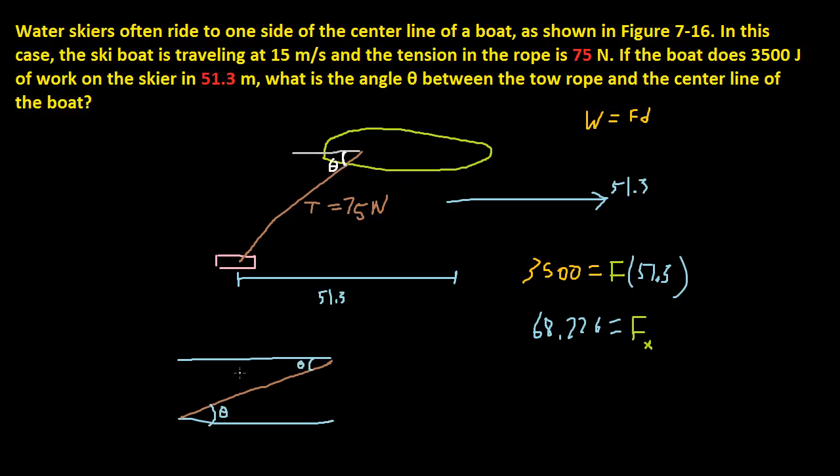So now we know that tension here is 75 newtons, and we know that this right here is around 68 newtons, so in order to calculate theta, if this is a right angle, we know that adjacent over hypotenuse is cosine theta, so that's SOHCAHTOA, cosine of theta is adjacent over hypotenuse.